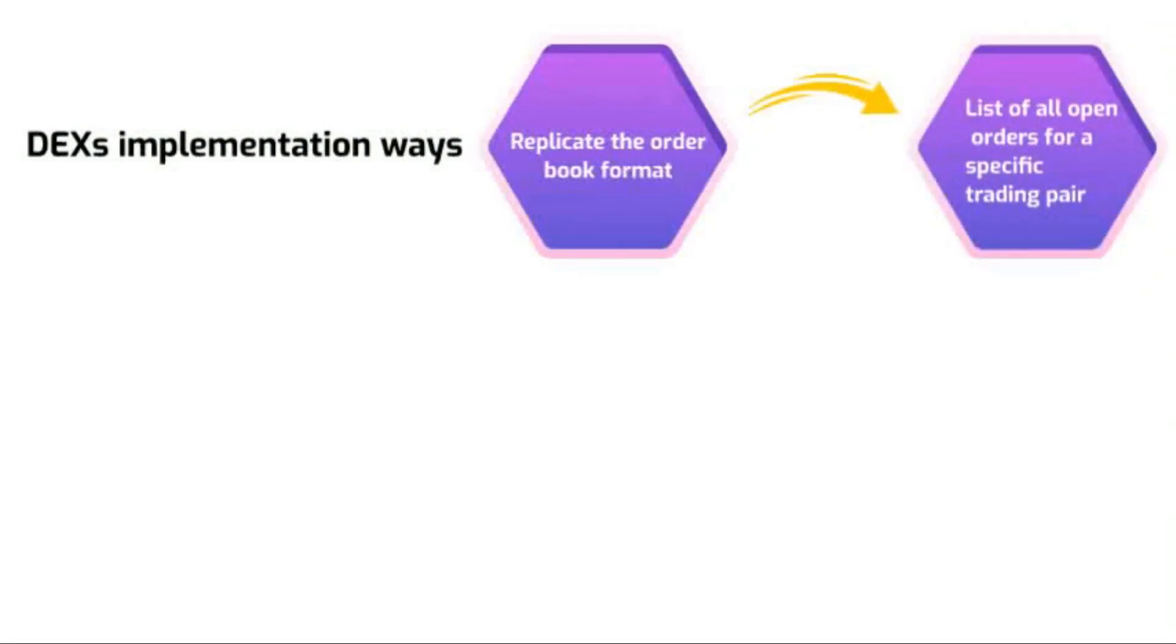DEXs can be implemented in different ways. Some replicate the order book format of a centralized exchange. The order book is the list of all open orders that are currently available on an exchange for a specific trading pair.